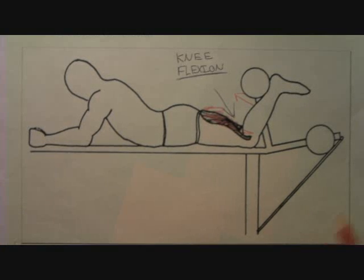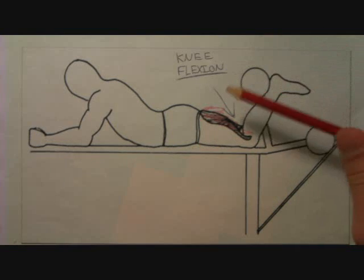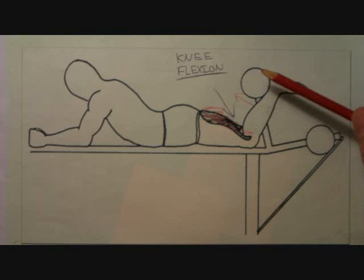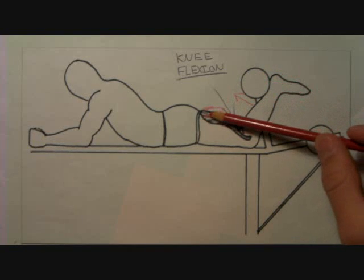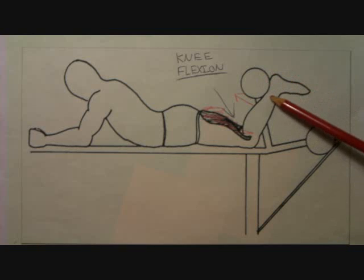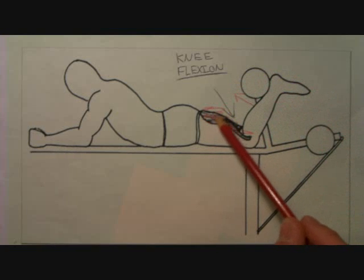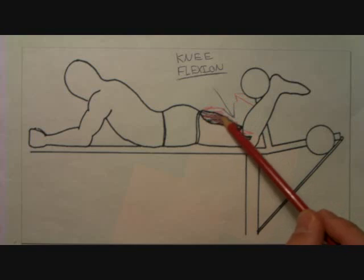It is important to note that if you are strengthening your quadriceps, it is also important to strengthen the muscles on the opposite side, which would be your hamstrings. This exercise here is good for strengthening your hamstrings. As the leg moves back this way, the hamstrings contract into knee flexion.